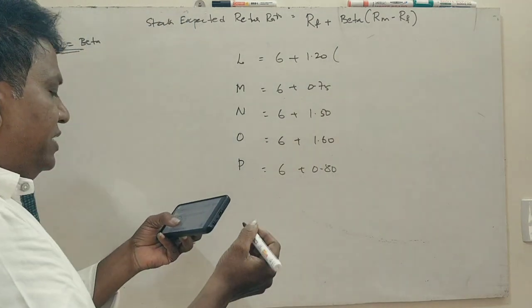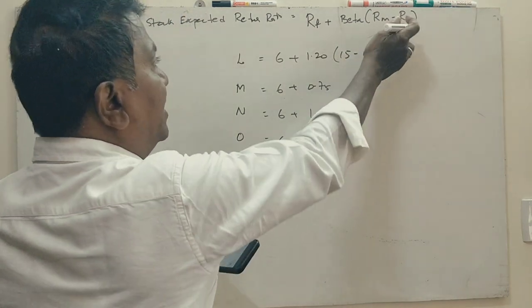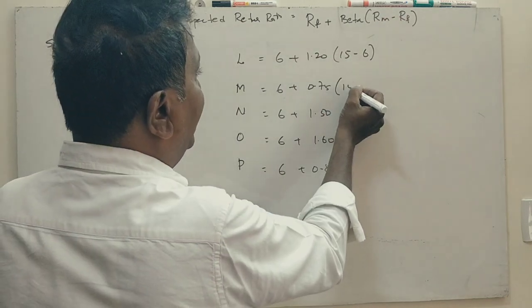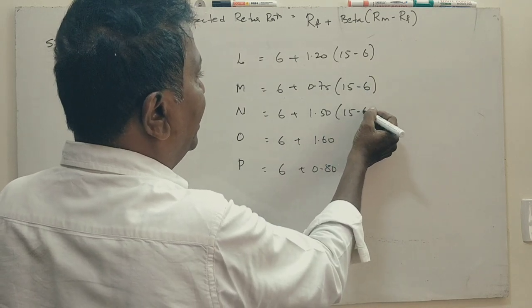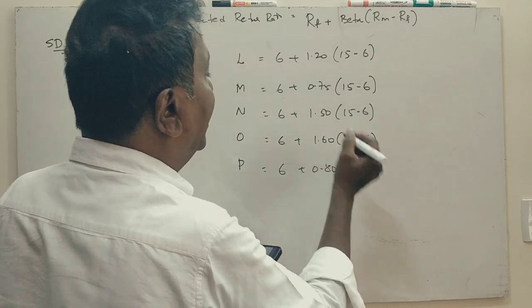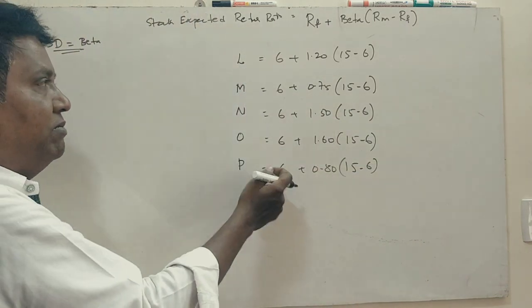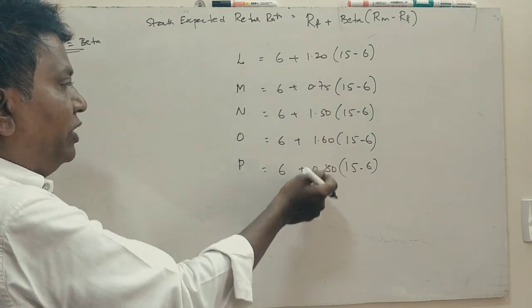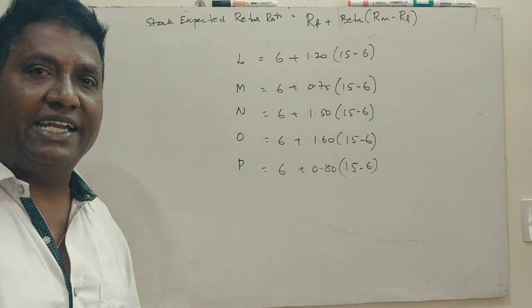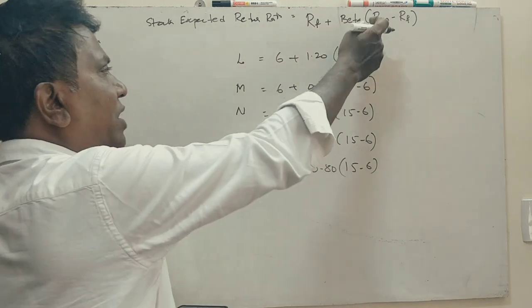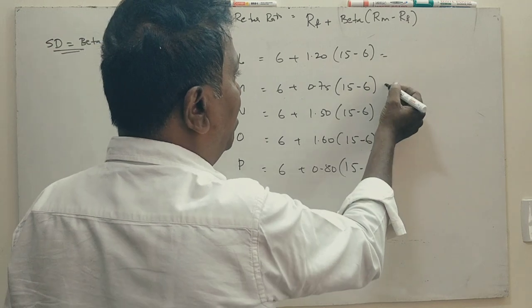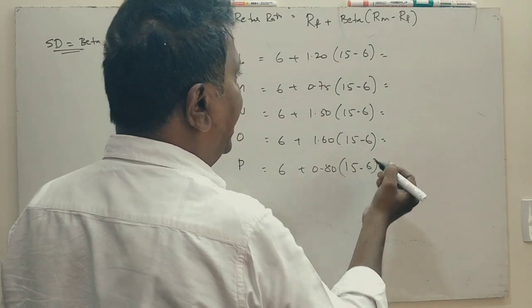So market return is 15, and risk-free return is 6. 15 minus 6. The risk-free returns are the same, standard deviation is the same, market return is the same, and the risk-free return is the same.